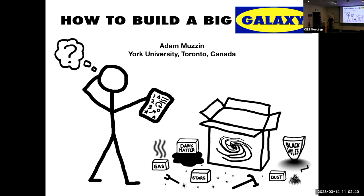Fabulous to be here at Carnegie, and hello to everyone online. So I'm going to tell you today about how to build a big galaxy. It's not by mistake that I put that logo up, because the analogy I'm going to make is that at the moment, in terms of how big galaxies are made, we really kind of understand all the pieces we have to put together, but the plan looks more like instructions from that company than a true blueprint. We're really working towards a blueprint, but I will make the case that we're not quite there yet.